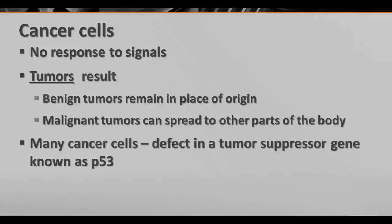There are two main kinds of tumors. Benign tumors stay in their place of origin and don't travel anywhere else. They can cause damage where they are, but they don't spread to other locations. Then there are malignant tumors. Malignant tumors can break off and spread into other parts of the body — they invade other areas and can have cells that travel through the bloodstream or lymphatic system and attach in other locations.